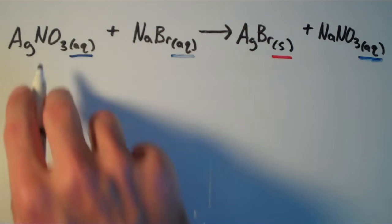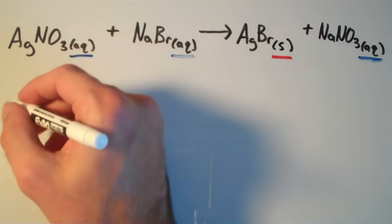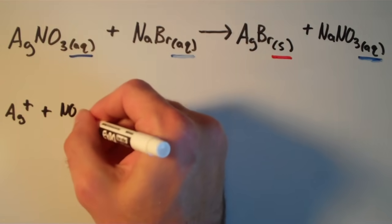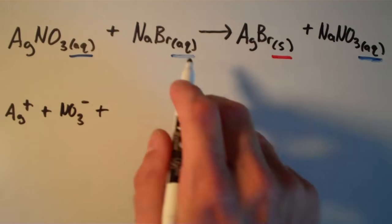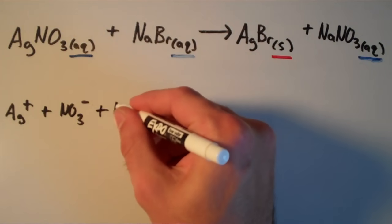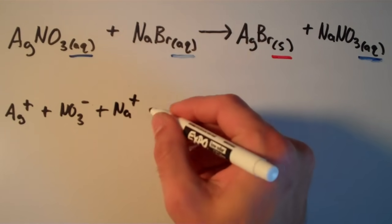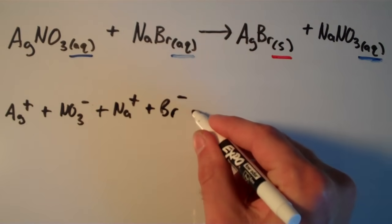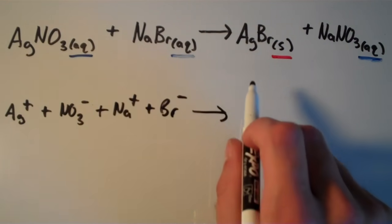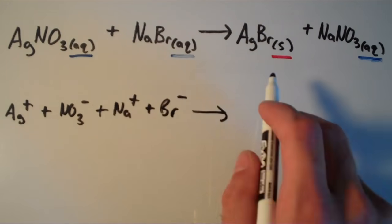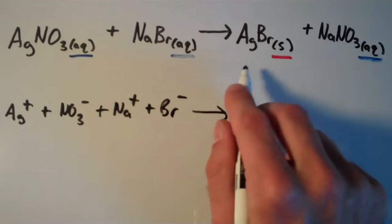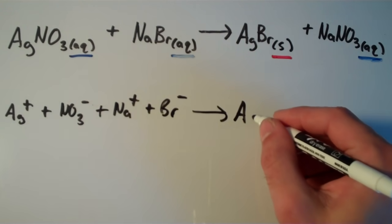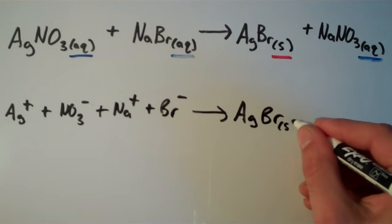Silver nitrate is aqueous, so we can break it up into its constituent ions: Ag+ and NO3-. Sodium bromide is also aqueous, giving us Na+ and Br-. That covers the reactants. For products, AgBr is not aqueous — it's an insoluble ionic compound, so it won't dissociate into ions in water. So it stays as AgBr solid.